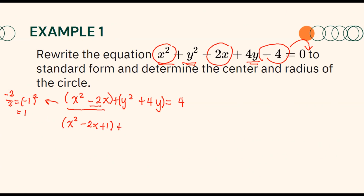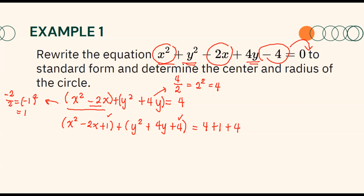Do the same thing for this binomial. Since we have 4 here, 4 divided by 2 equals 2, then squared gives us 4. So our perfect square trinomial will become y squared plus 4y plus 4. However, since we added 1 and 4 on the left side of the equation, we also need to add 1 and 4 to the right side of our equation. Remember, what you have added on the left side should be added on the right side as well.